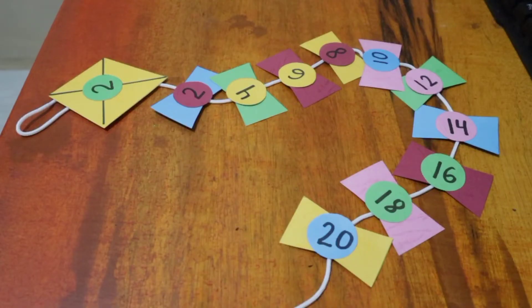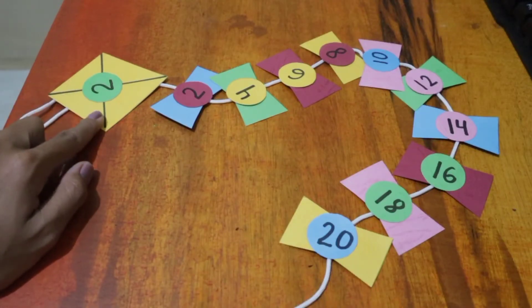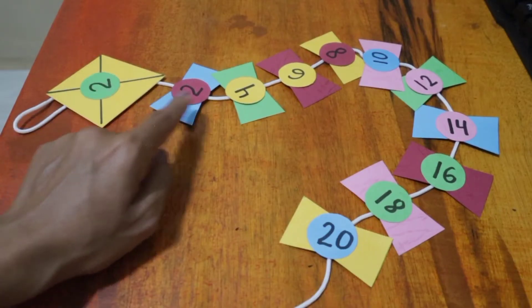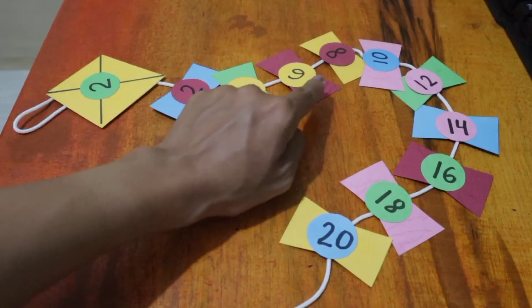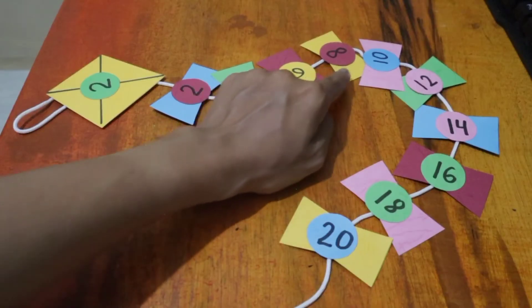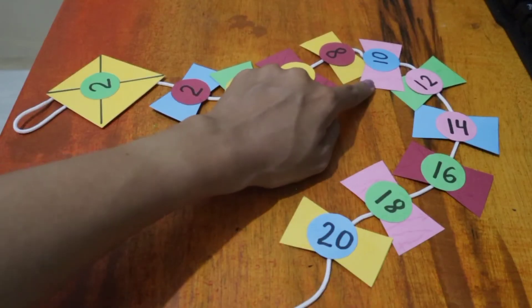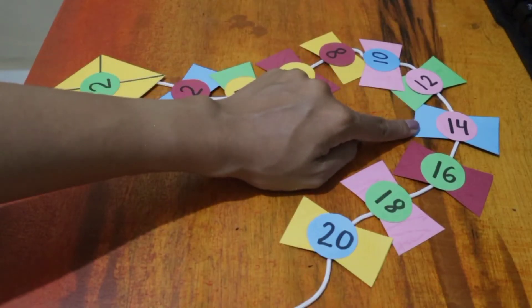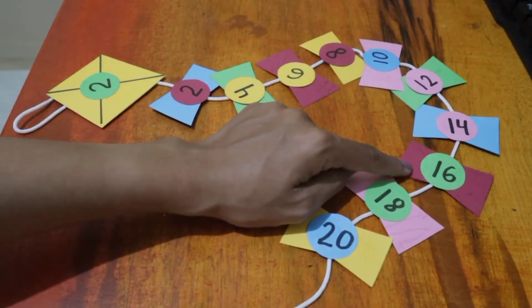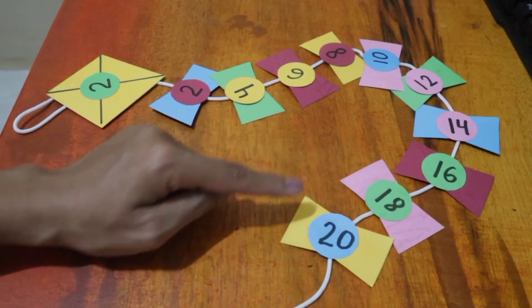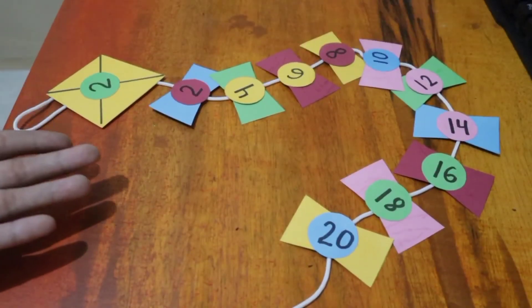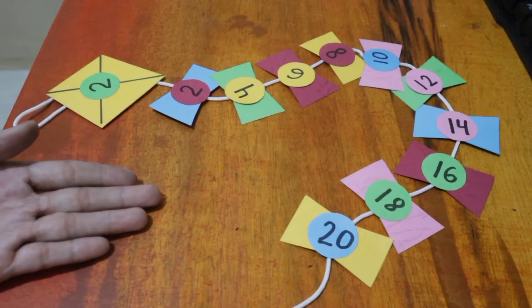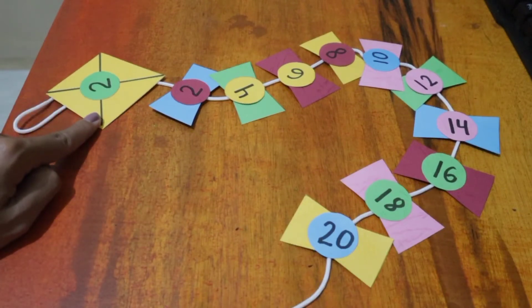So this is my skip counting project. Because I make skip counting by two, so it will be 2, 4, 6, 8, 10, 12, 14, 16, 18, 20. We can also use this for multiplication project, example multiplication by 2.